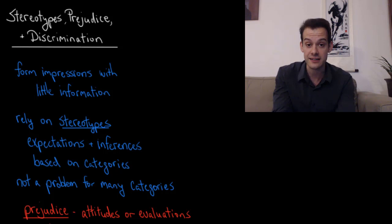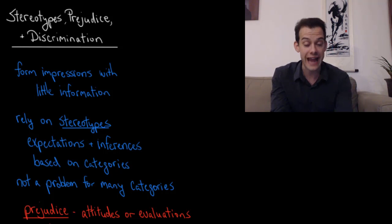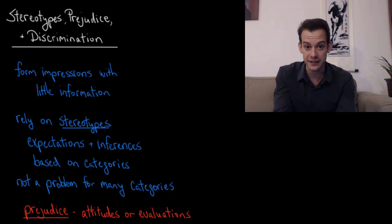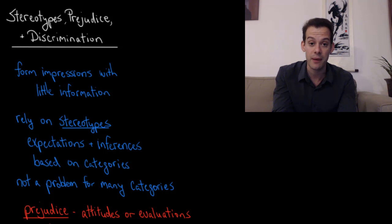Stereotypes are the expectations that we have and the inferences that we make based on categories. For many categories this isn't really a problem — you have stereotypes related to chairs. You can see some new object you've never seen before and safely assume that you can sit in it, based on your experience with other chairs. But where this becomes a problem is when we start making inferences and assumptions about people based on the groups that they're in.